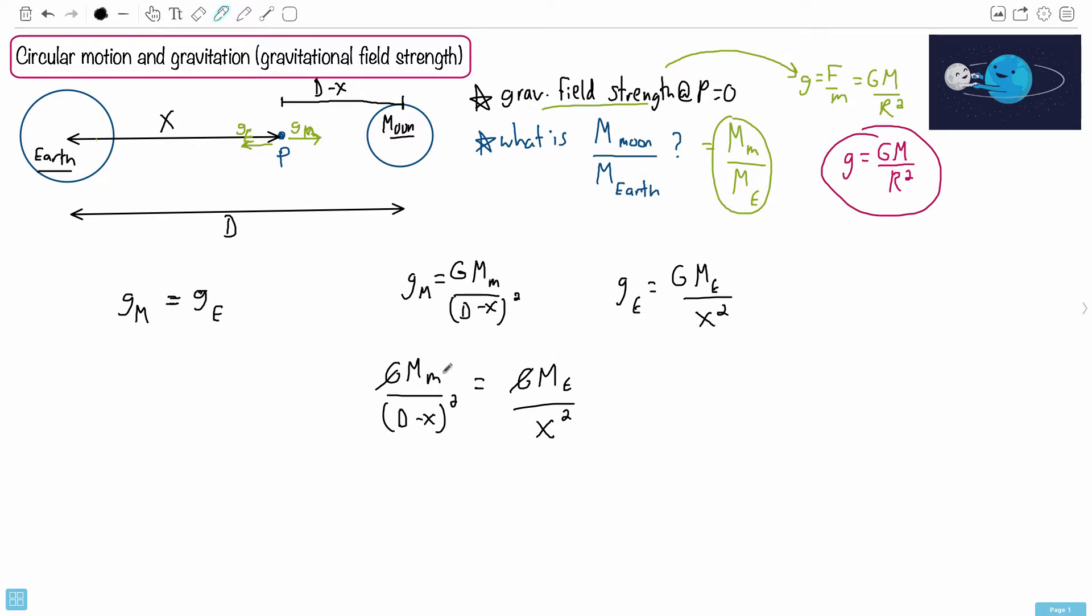Do you notice that I could just take this equation right here, get the M M by itself, divide by M E. So I have mass of the Moon over the mass of the Earth. And I could take my D minus X squared and put that on the top over here. So that means it comes over here. It goes D minus X squared over X squared. And lo and behold, that is answer A.